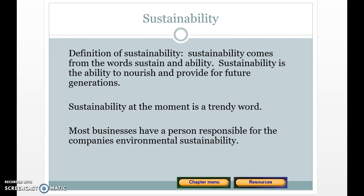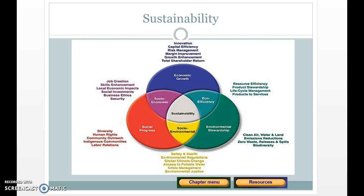Sustainability deals with those three P's — people, profit, and planet — or equivalently: social, economic, and environmental sustainability. Where economic growth, social progress, and environmental stewardship all overlap, you have a sustainable company. You can't have one without the others.